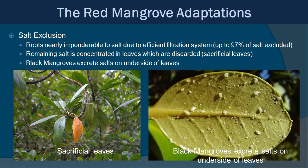Living in saltwater, red mangroves have to deal with salt, and one way they do it is through salt exclusion. The roots are nearly impenetrable to salt due to an efficient filtration system — up to 97% of salt is excluded from entering the mangrove itself. The remaining salt is concentrated in leaves, which are discarded as sacrificial leaves. This is a metabolically expensive process. Other mangroves don't necessarily do that. For example, the black mangrove simply takes the salt in and excretes it on the underside of the leaves — you can actually see salt crystals on the back of a black mangrove leaf. There are essentially salt excluders, like the red mangrove, and salt extruders, like the black mangrove.